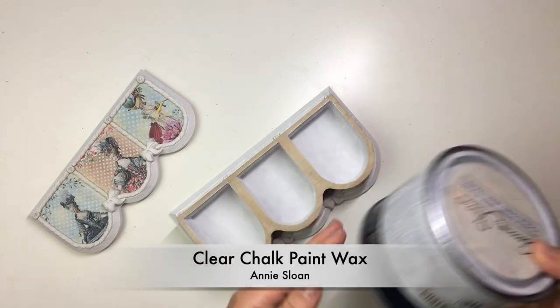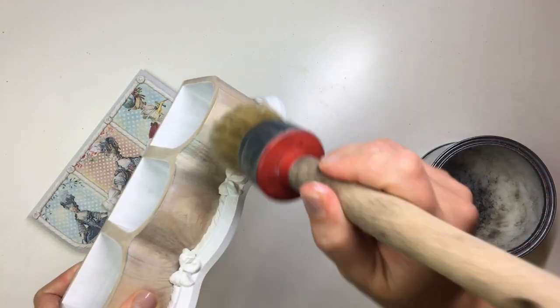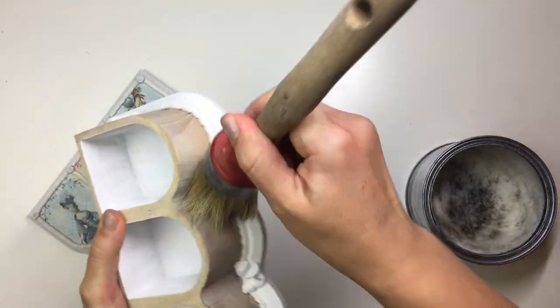Next I moved on to the aging and waxing parts. So first I applied a coat of clear wax. I used Annie Sloan, but any clear wax will do.